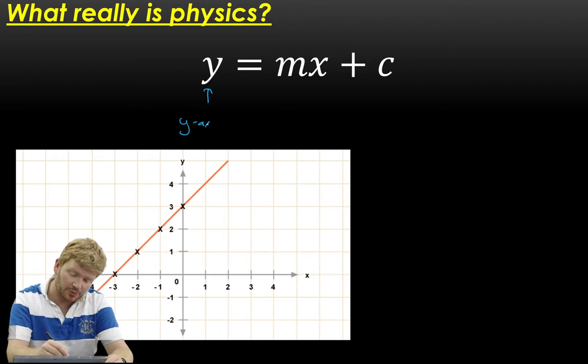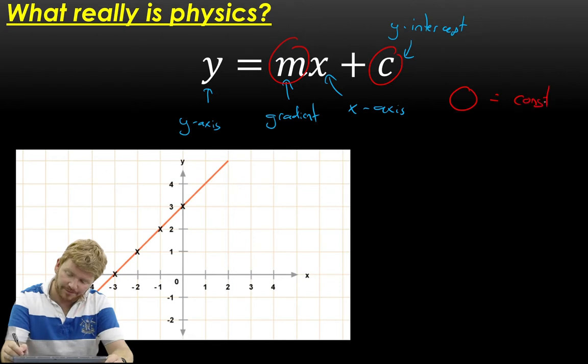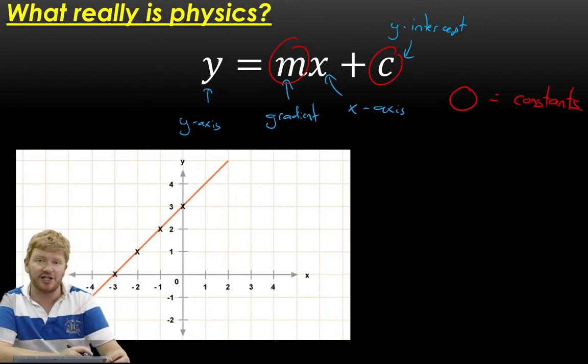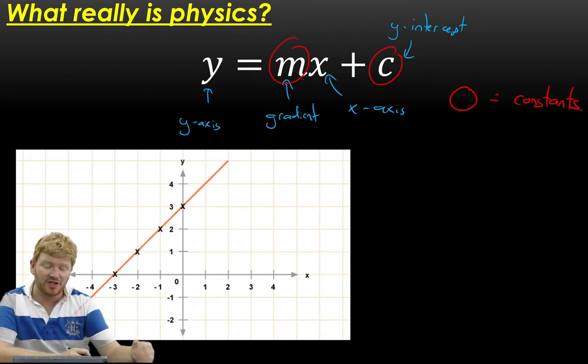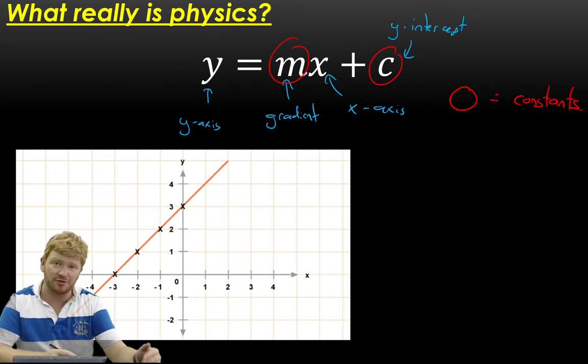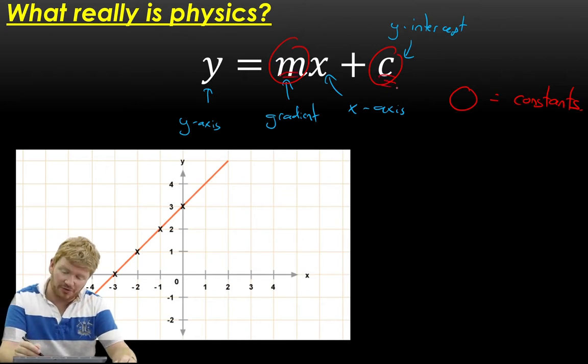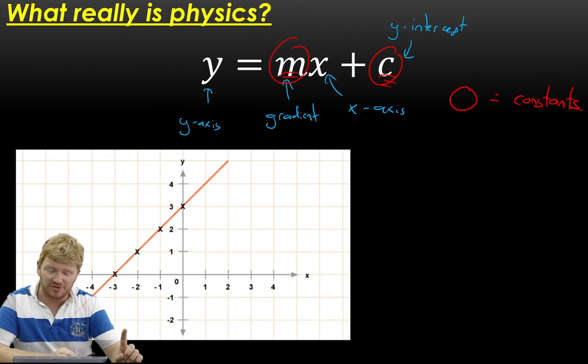Now what you'll notice is that M and C are both constants. That is, they are a number that doesn't change. And a big part of what we try to do in physics is to find these constants. So what you're going to find yourself doing again and again as you go through your physics career is you are trying to force something to be M and force something to be C. And that's going to make a lot more sense in the next part of the video.